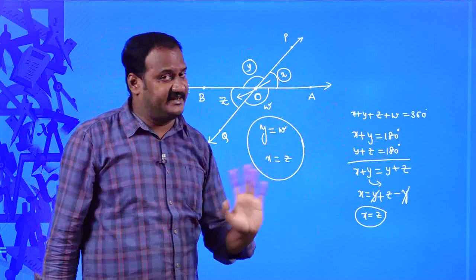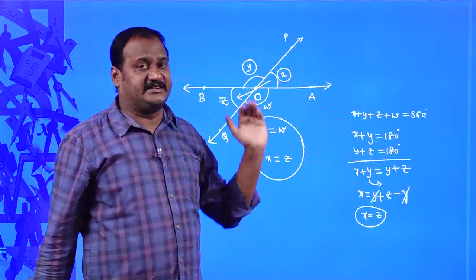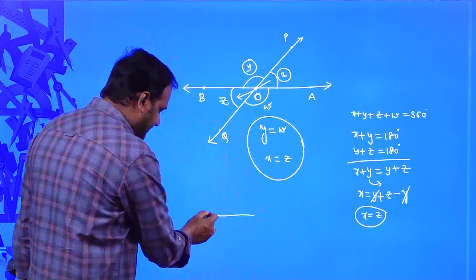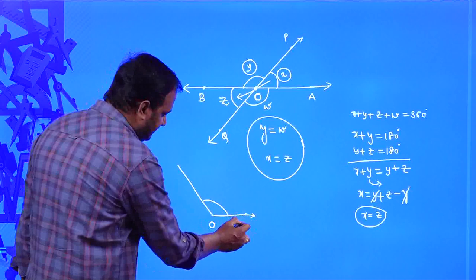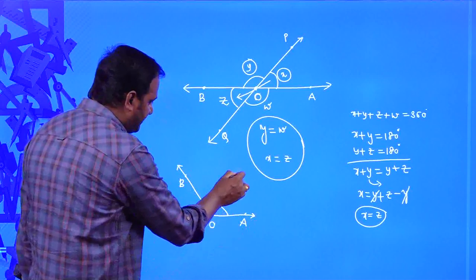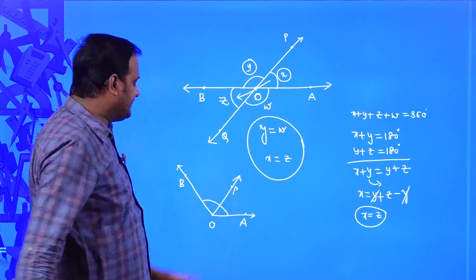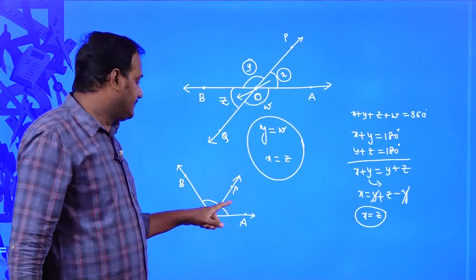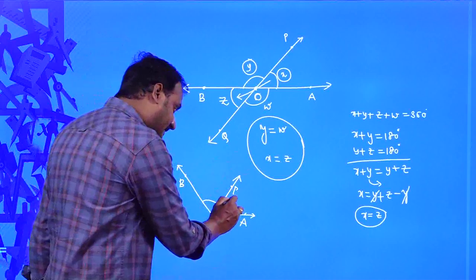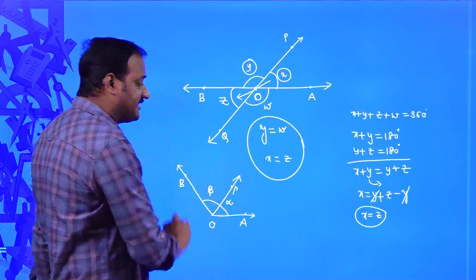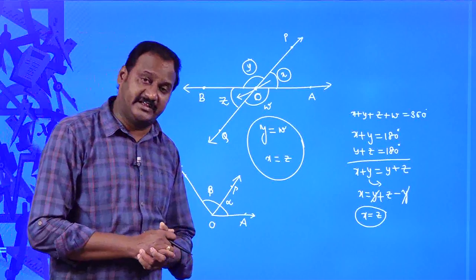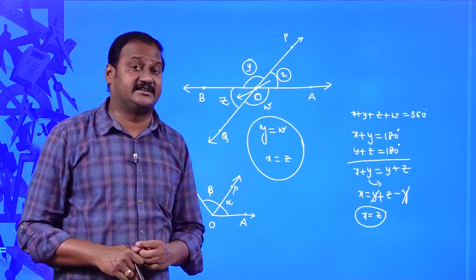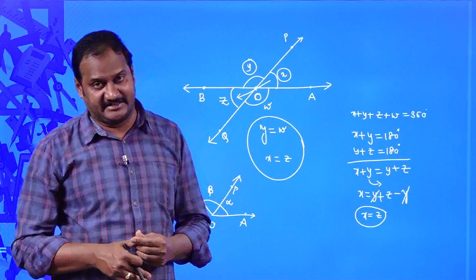Two angles are said to be adjacent angles if they have a common ray. Here OP is the common ray for X and Y, that is why X and Y are adjacent angles. Note that if two angles are adjacent, it does not mean their sum is always 90 or 180 degrees — it can be anything. For example, if there is a ray OA, ray OB, and a ray OP in between, the sum of those two angles alpha and beta need not be 180 degrees, but they are still adjacent angles because OP is their common ray.